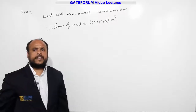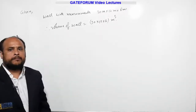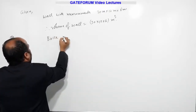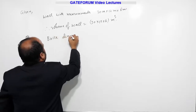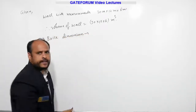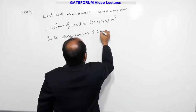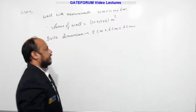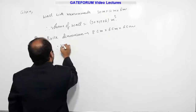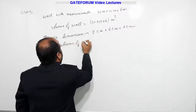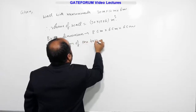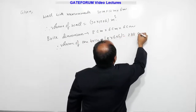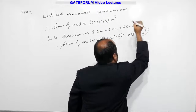One more statement is given: this wall is constructed with bricks of given dimensions. Brick dimensions are 8 centimeters into 6 centimeters into 6 centimeters. If you multiply these three values you get the volume of each brick. Therefore, volume of one brick is 8 into 6 into 6, which is 288 centimeter cube.